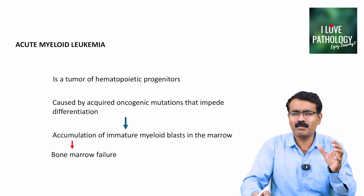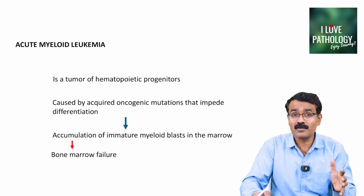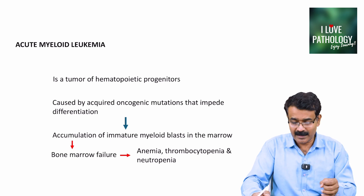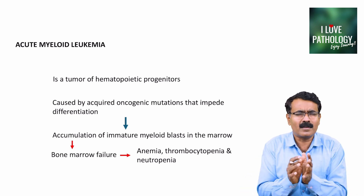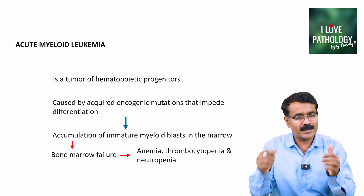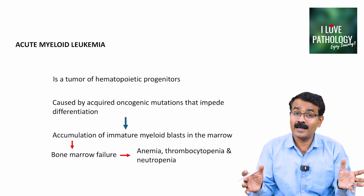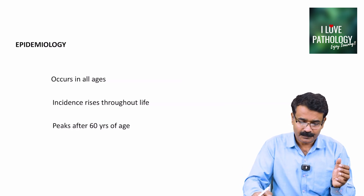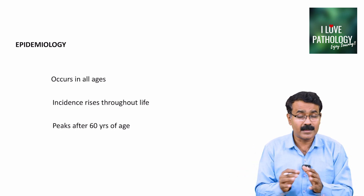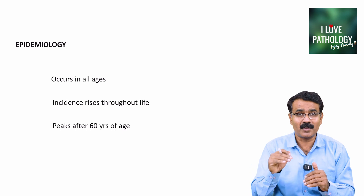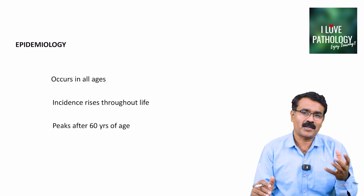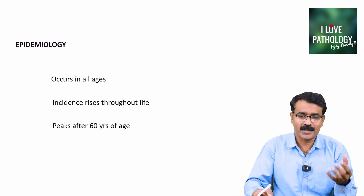The symptoms of acute myeloid leukemia are because of bone marrow failure — because of anemia, thrombocytopenia, and neutropenia. Regarding epidemiology, it can occur in all age groups. The incidence of acute myeloid leukemia increases as we grow older, and the peak incidence is around 60 years of age.